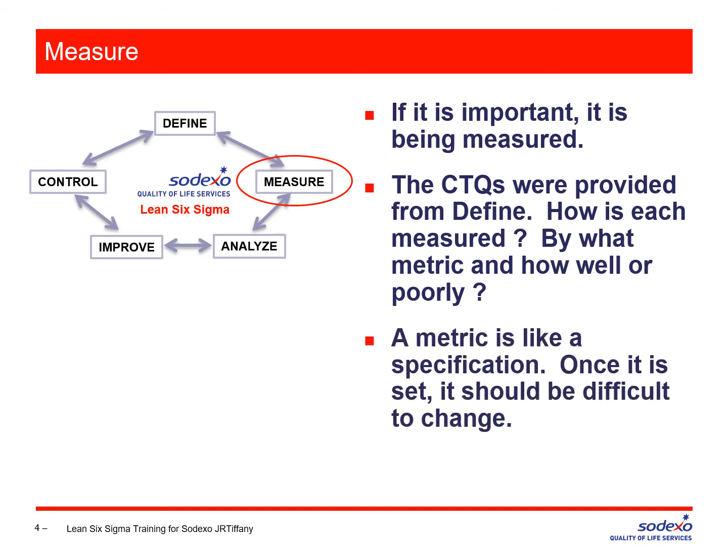When we define how we're going to collect the data and what data we're going to collect, we try to stay as stable as possible. Once we've defined a metric for our CTQs and a method for data collection, we have to stick with it. If we find it's unworkable, then as a team we go back and change the method.